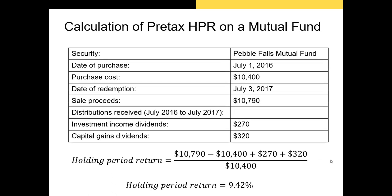For the pre-tax holding period return on a mutual fund, we take the price at the end minus the price at the beginning plus our dividends — which in this case were $270 — plus any capital gains distributions, which occur when the mutual fund liquidates positions in stocks or bonds and transfers those gains to us. Dividing by the price at the beginning gives us a holding period return of 9.42%.